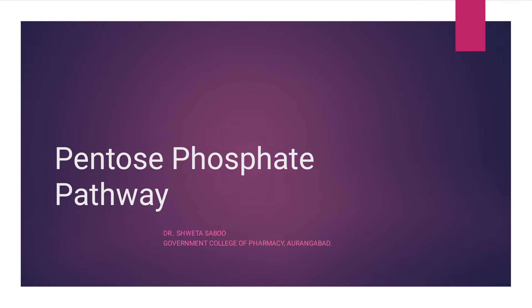Today we discuss the importance of the pentose phosphate pathway. It is called the pentose phosphate pathway because a six-member sugar — a hexose sugar — can be converted to a five-carbon sugar, that is ribose 5-phosphate. This means there is a shunting or reduction of one carbon atom, and therefore it is also called the HMP shunt.